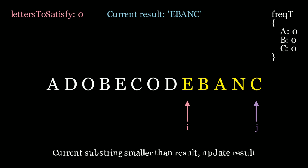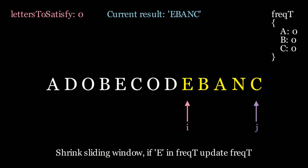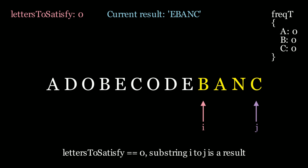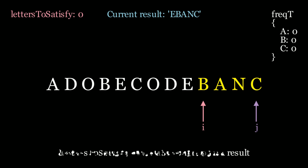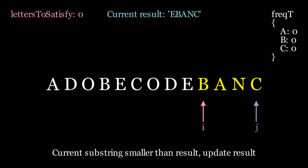Now we shrink the window again. We're at b. Letters to satisfy is still equal to 0 — we have an a, a b, and a c. So we could update our result. In this case our result is smaller than the previous result, so we update the result to b, a, and c.